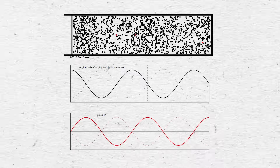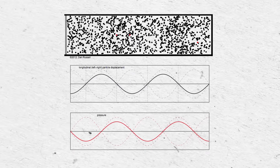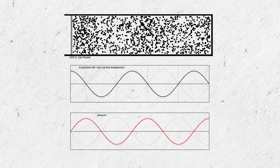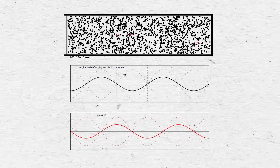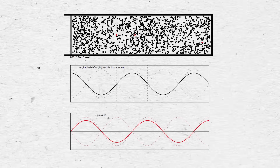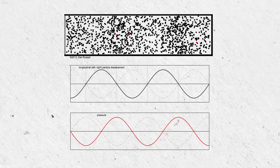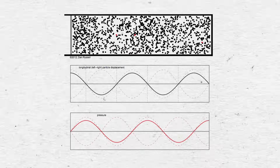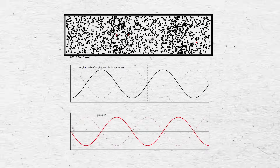To understand why this particular string example is flawed, let's look at these animations by Dr. Dan Russell at Penn State University. You can see nodes and antinodes, similar to the string demonstration, but this time we're dealing with a longitudinal wave. Think of these dots as air molecules that are being bunched together in compression and spaced apart in rarefaction, just like sound waves.